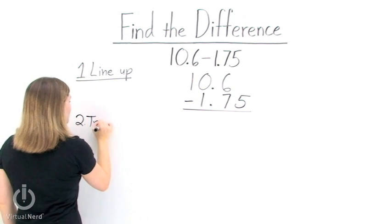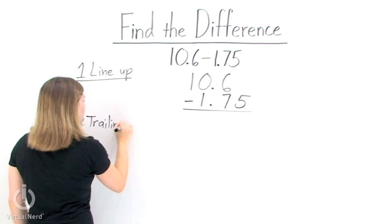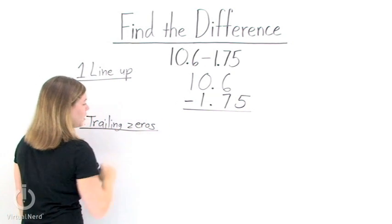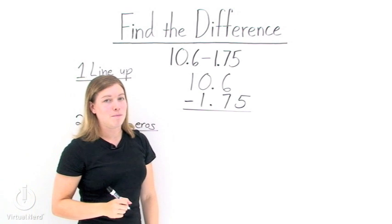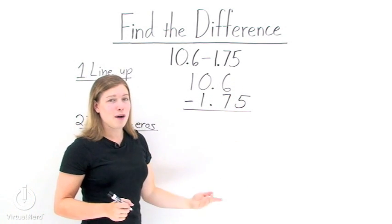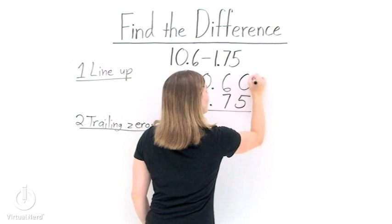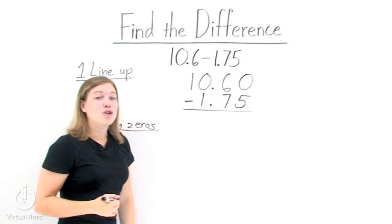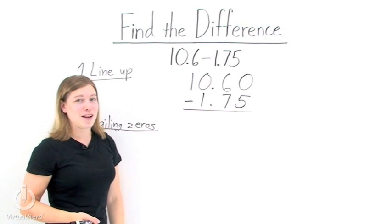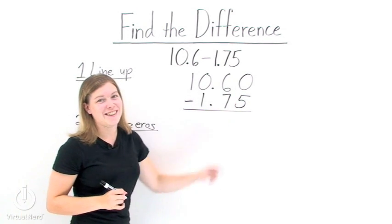Step number two is going to be adding any trailing zeros that we need to put in as placeholders in order to do our subtraction. So look back at our problem. Right here, we have nothing minus 5. Well, that won't work, so we need to add a trailing zero here. Remember, trailing zeros do not change the value of the number. So we can add as many as we want, but we only need this one.